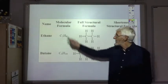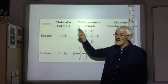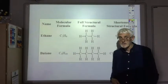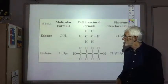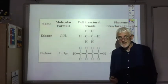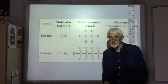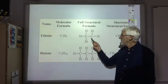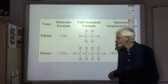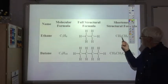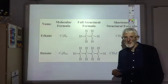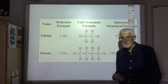Sometimes in questions you're asked to give a molecular formula, or sometimes it's a structural formula — either a full or shortened. It's important you're aware of the difference. So for ethane, the molecular formula is C2H6, which just tells you how many carbons and hydrogens there are. The full structural formula really shows you the detail of exactly how these atoms are joined together. The shortened structural formula gives much the same information, just in a slightly more concise manner.